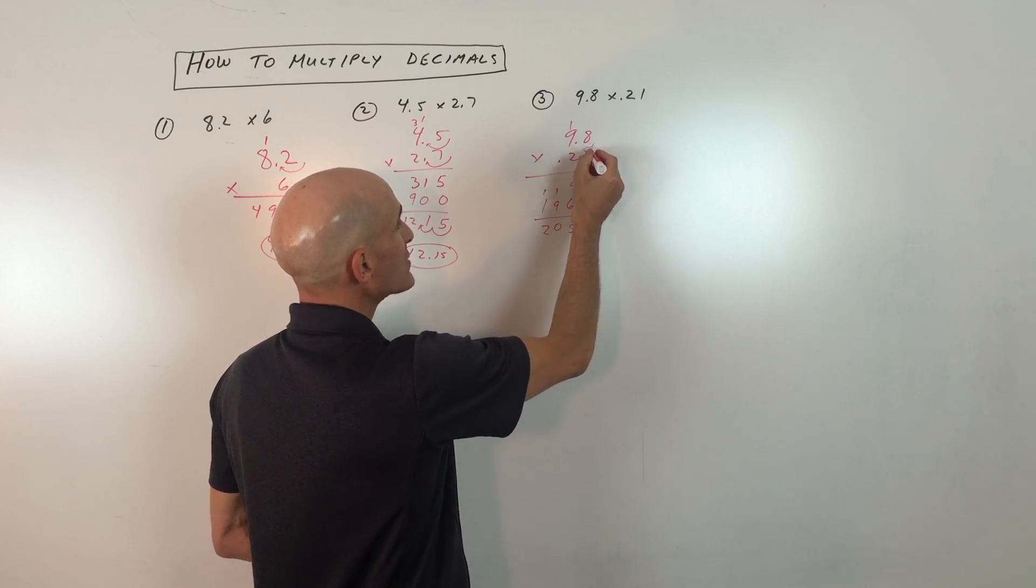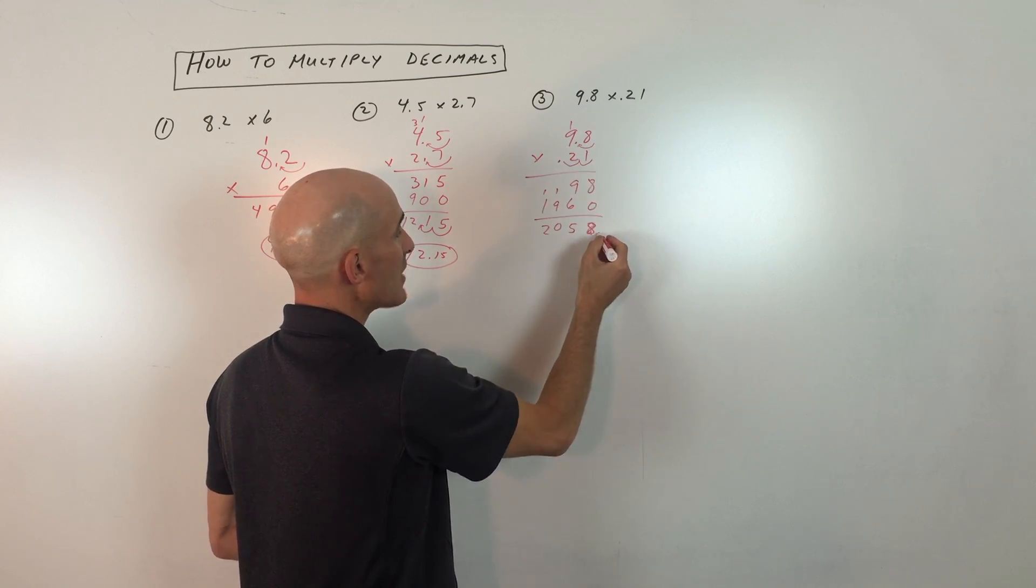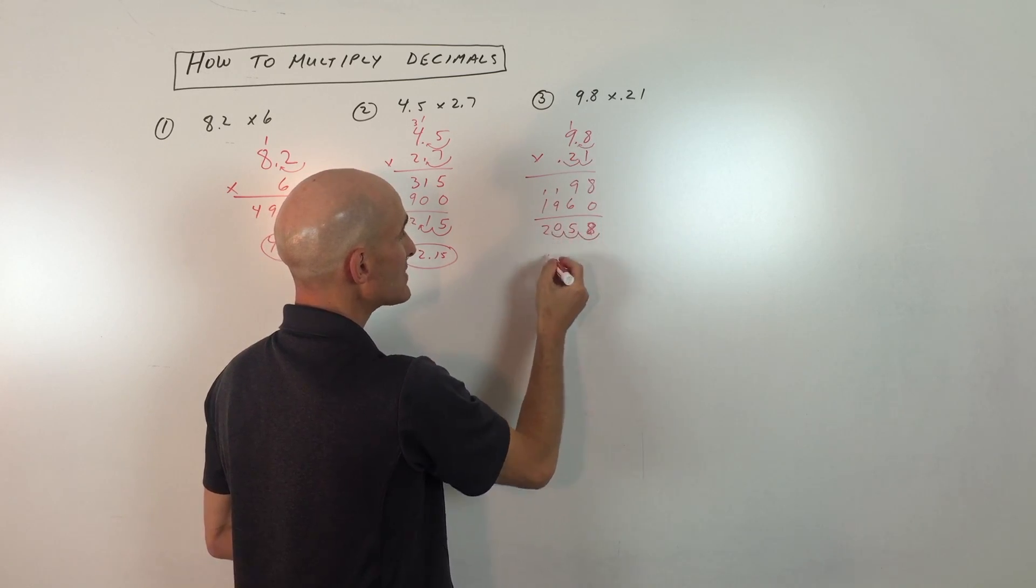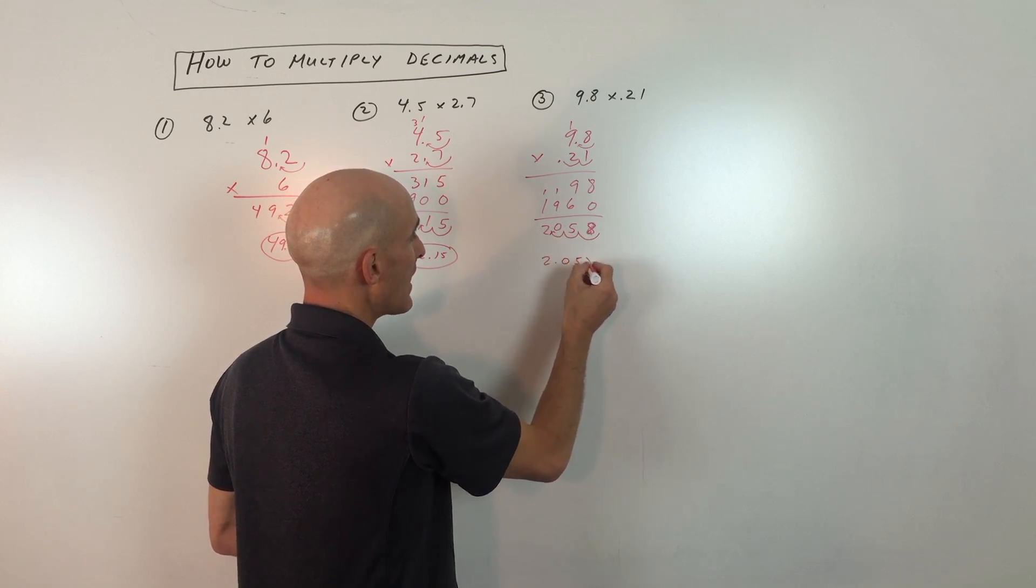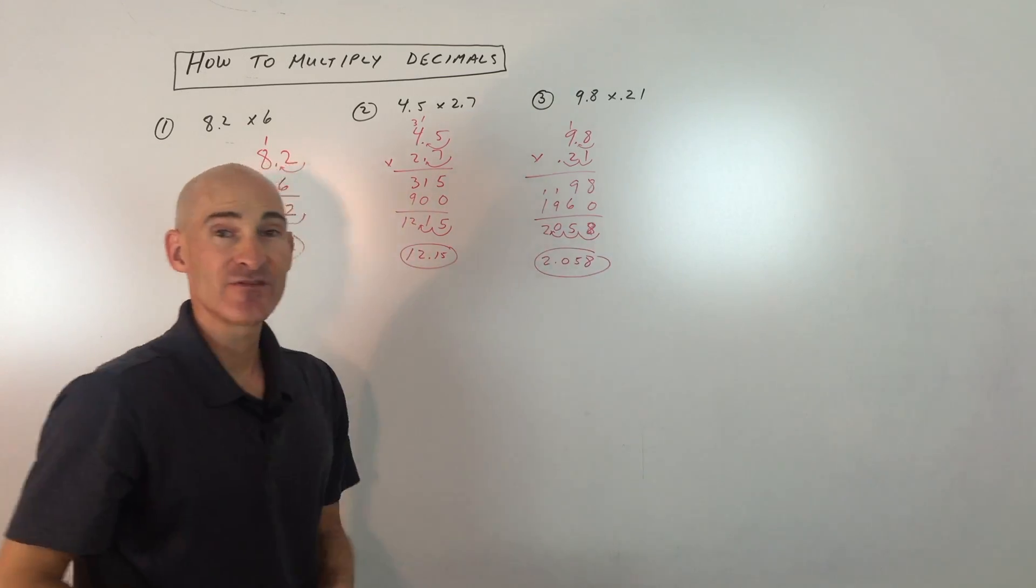But it looks like the decimal point's been moved one, two, three places. So I have to move this one, two, three places. It's 2.058. So that's the final answer.